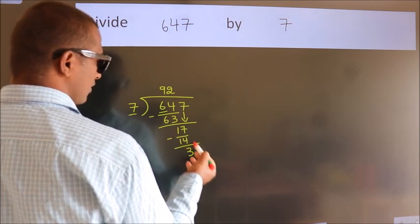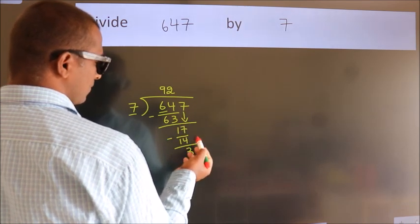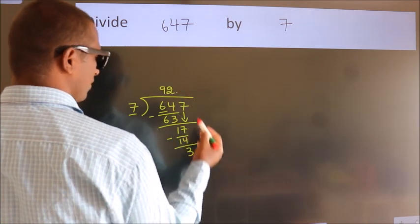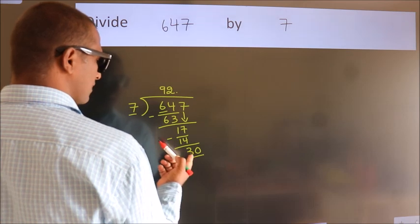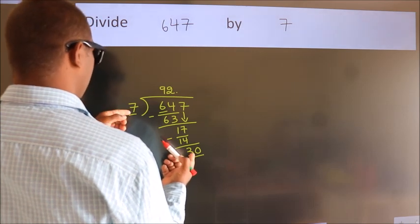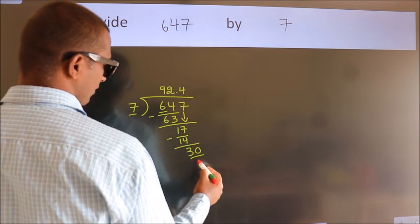After this, no more numbers to bring down. So what we do is, we put a dot and take 0. So, 30. A number close to 30 in the 7 times table is 7 fours, 28.